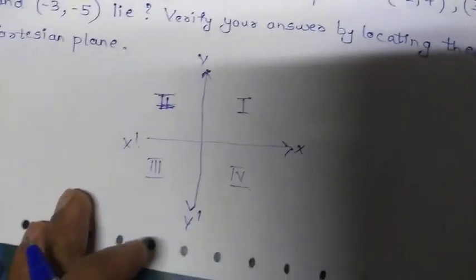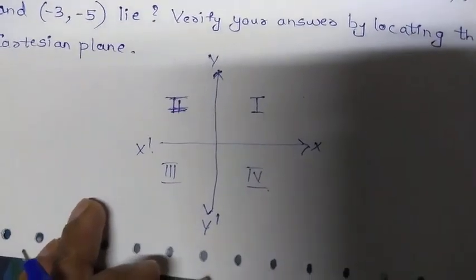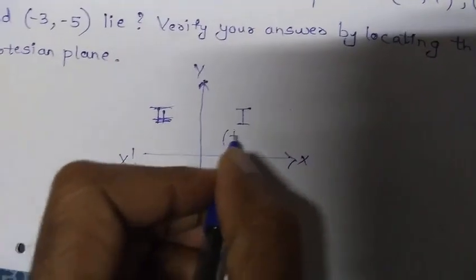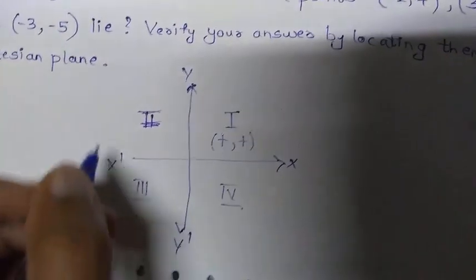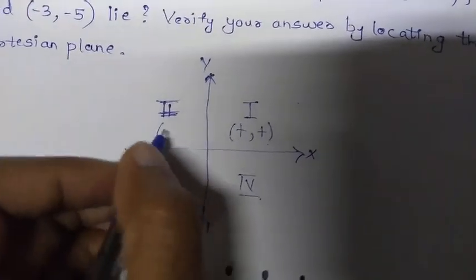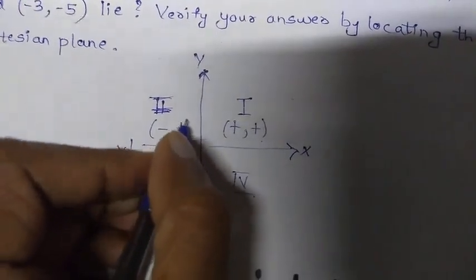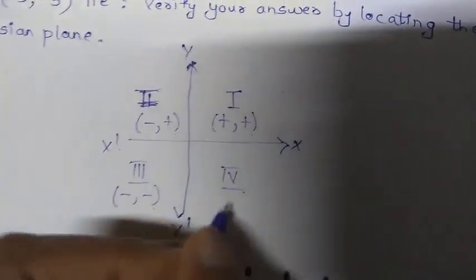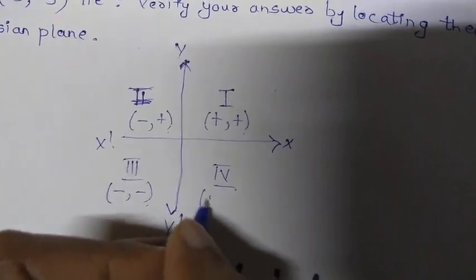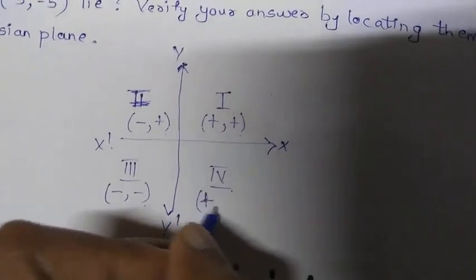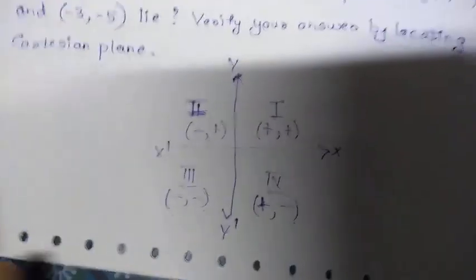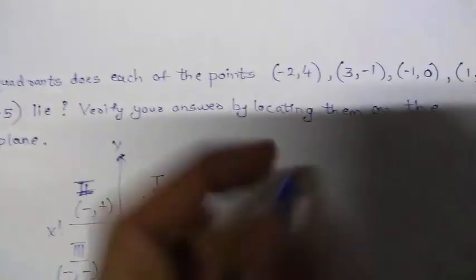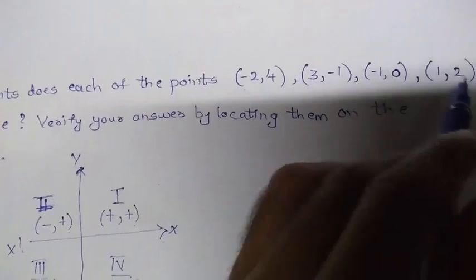We also know the signs of each quadrant: in the 1st quadrant signs are (+, +); in the 2nd quadrant (−, +); in the 3rd quadrant (−, −); and in the 4th quadrant (+, −). Now we check in which of these quadrants each point lies.